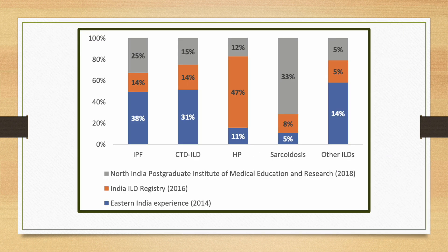This is a bar chart from the paper which tells us about the spectrum of ILDs in India requiring treatment, taken from prospective studies. The grey area is the PGI Chandigarh Registry, according to which sarcoidosis is the predominant type of interstitial lung disease. The orange one is the ILD India Registry of 2016, according to which hypersensitivity pneumonitis is the predominant ILD. And there is the Eastern India Experience of 2014, which has almost similar prevalence of IPF and connective tissue disease ILD.